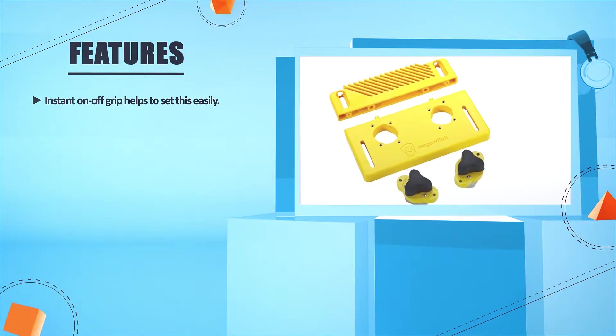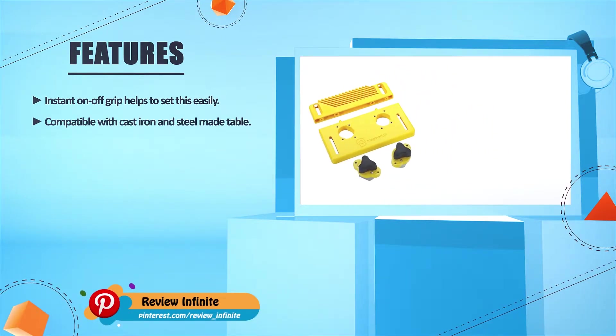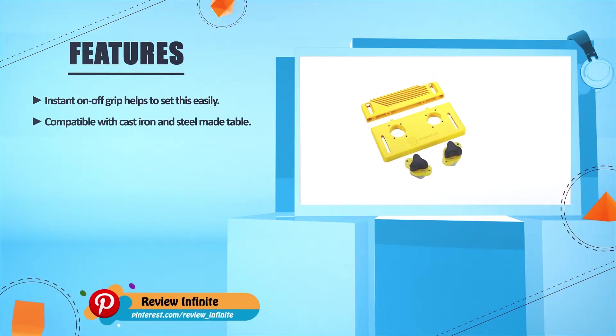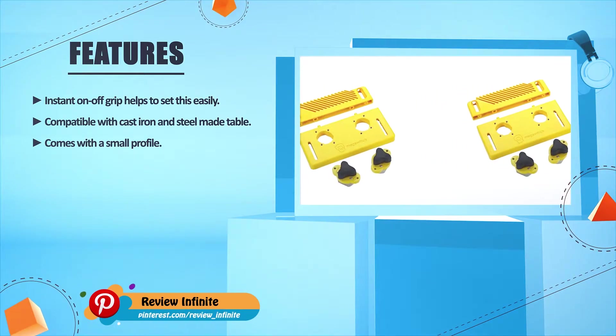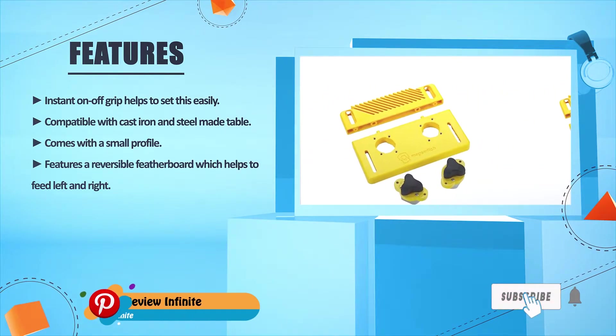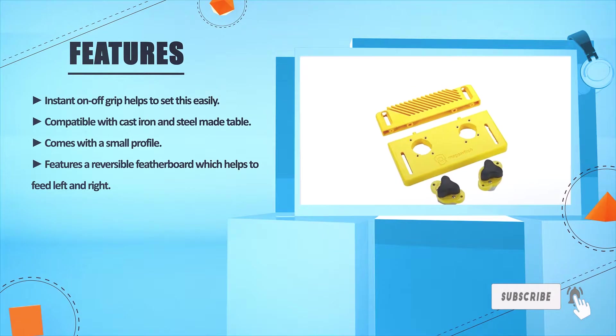Instant on-off grip helps to set this easily. Compatible with cast iron and steel made tables. Comes with a small profile. Features a reversible featherboard which helps to feed left and right.